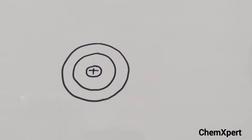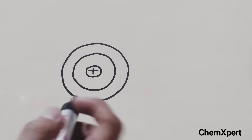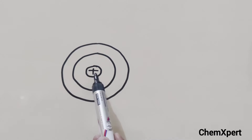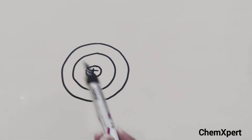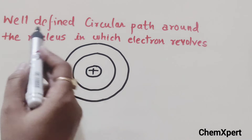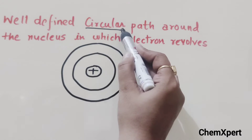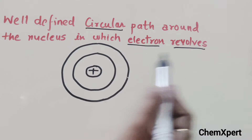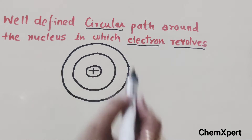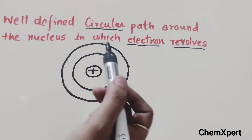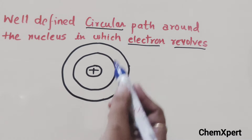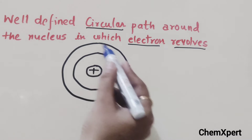If we explain through structure, then orbit is a well-defined circular path around the nucleus in which the electron revolves. These circular paths are known as orbits.